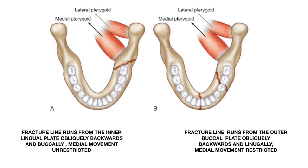Moving on to the vertical point of view, the concept of favorability and unfavorability still depends on the pull of the muscles resulting in movement of the proximal fragment. In picture A, the fracture line runs from the inner lingual plate obliquely backwards and buccally, where medial movement of the proximal fragment is unrestricted — this is a vertically unfavorable fracture. In picture B, the fracture line runs from the outer buccal plate obliquely backwards toward the lingual side, restricting medial movement — making it a vertically favorable fracture.